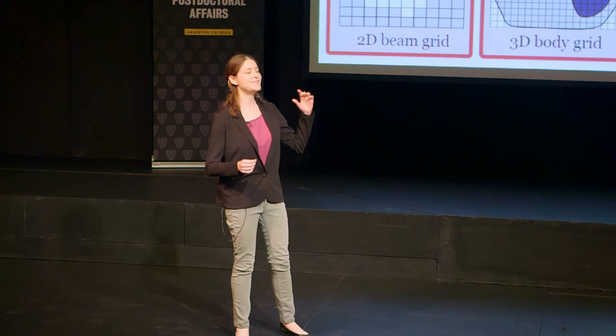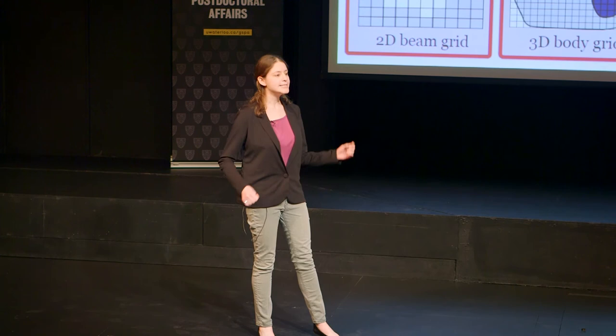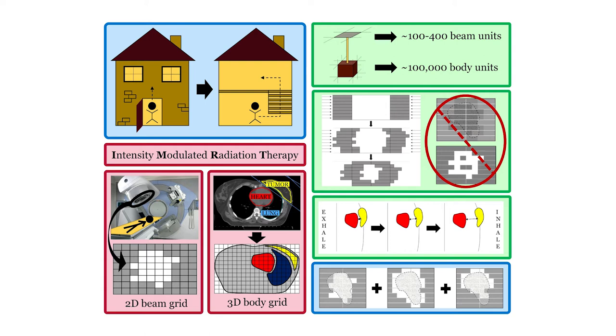The second issue we run into is making sure that our plans are actually deliverable. If you look to the left here, you see what our device's modulating interior actually looks like. But to the right, you'll see plans that are impossible to deliver that a computer is liable to recommend.